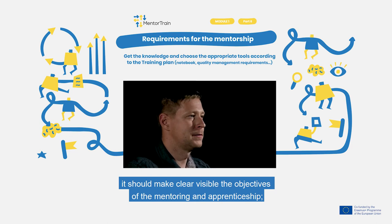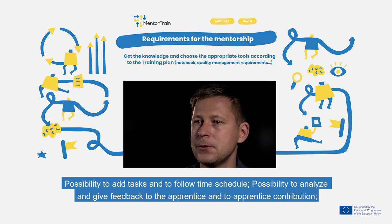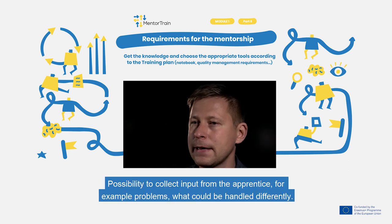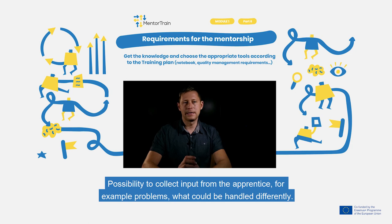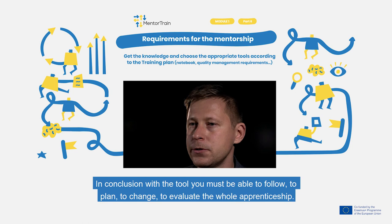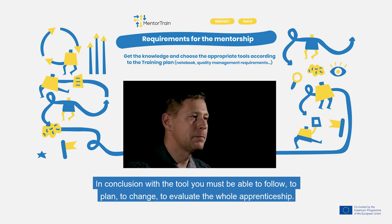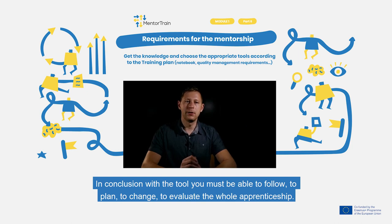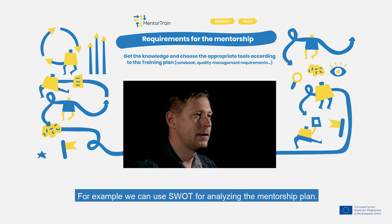What possibilities must a good tool for mentoring have? It should make the objectives of the mentoring and the apprenticeship clearly visible, have the possibility to add tasks and follow a time schedule, the possibility to analyze and give feedback to the apprentice and their contributions, and the possibility to collect input from the apprentice — for example, problems that could be handled differently. In conclusion, with the tool you must be able to follow, plan, change, and evaluate the role of the apprenticeship.